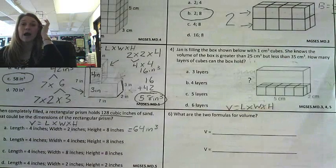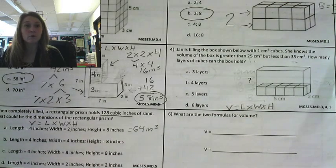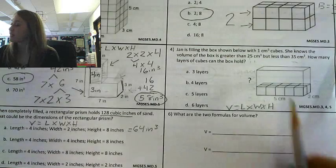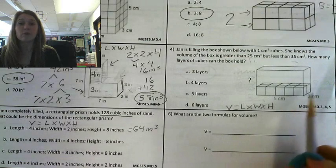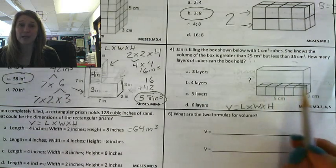So I know that volume is length times width times height. What do they give me? They give me a length of five and they give me a width of two. I also know that they're giving me this entire bottom layer.